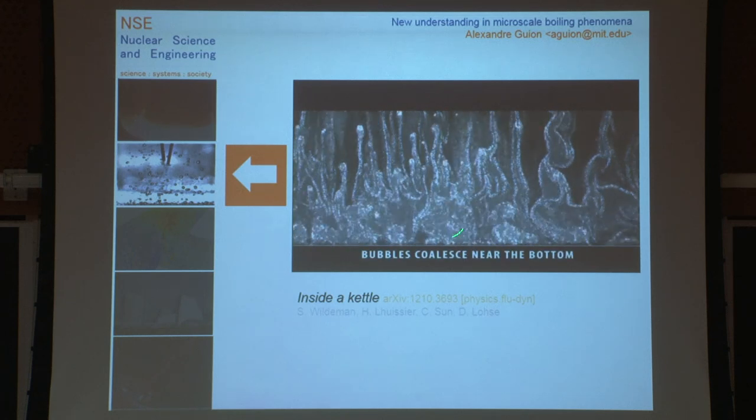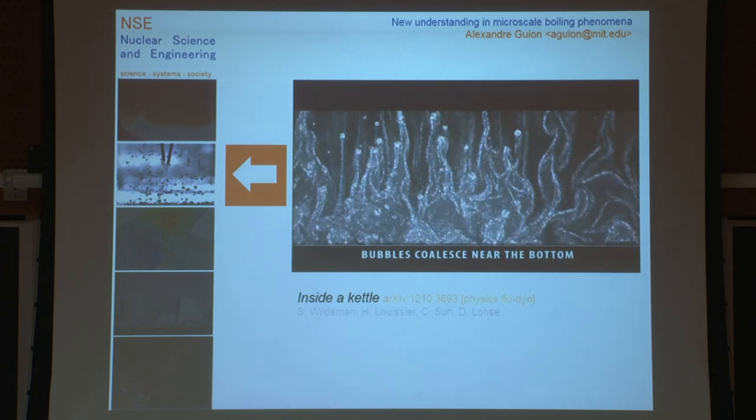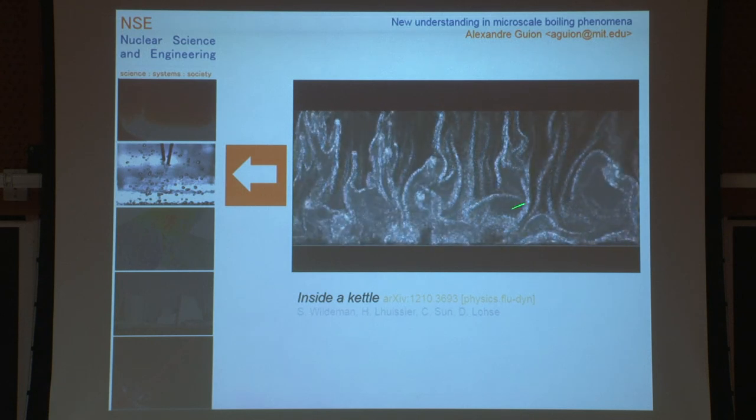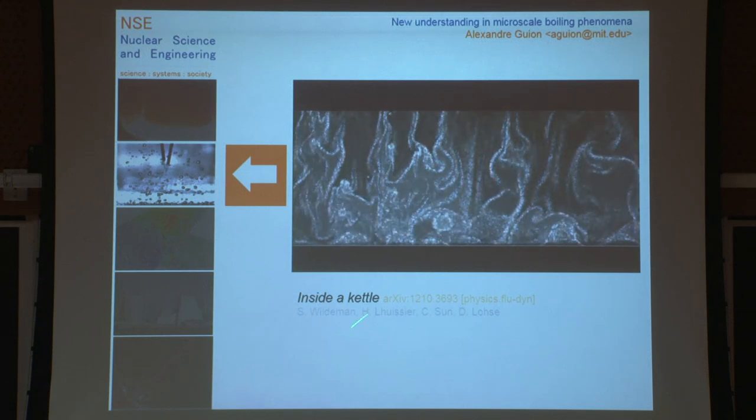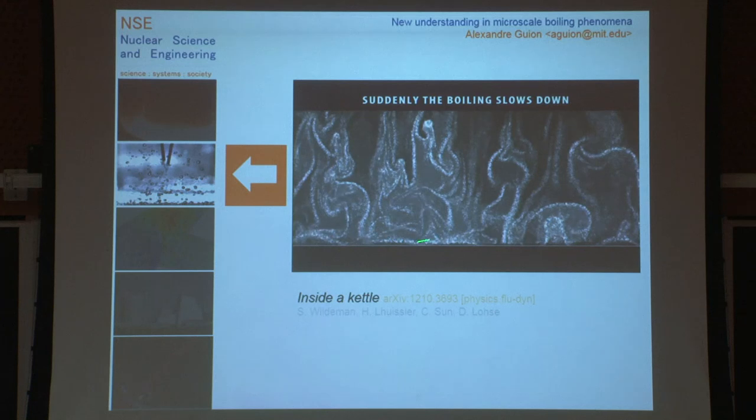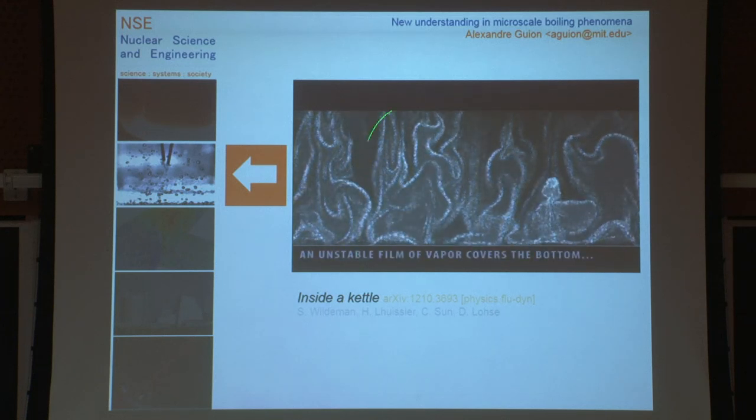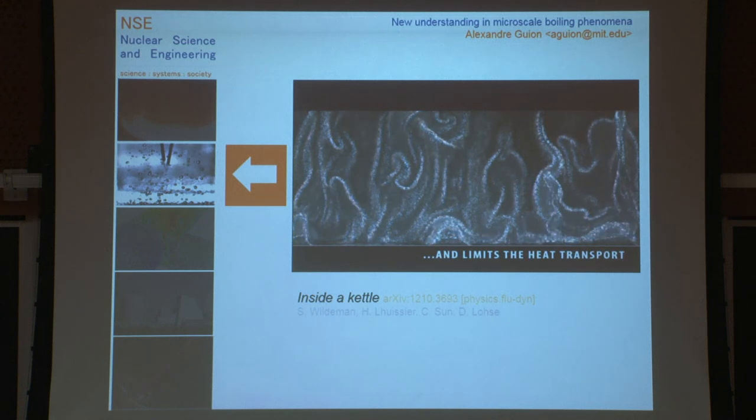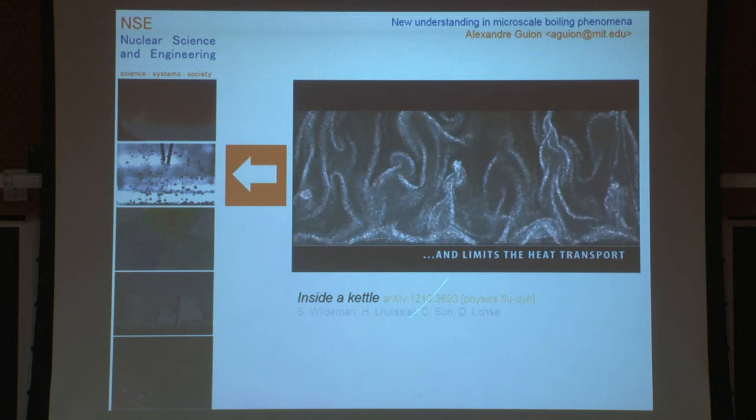If you pay attention to the structures at the wall, you see that the bubbles grow bigger and bigger. Those tiny initial bubbles coalesce with others, creating larger structures until they reach a point where they all coalesce into a film. The whole dynamics is slowed down. This is film boiling. This is what we call the boiling crisis.